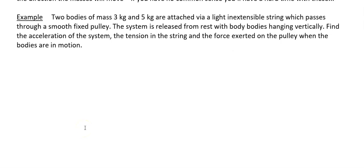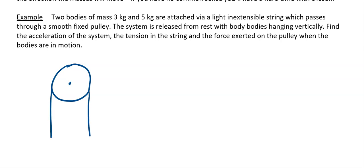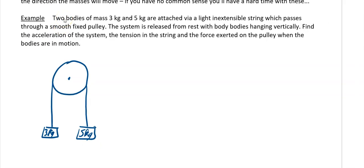Two bodies of mass three kilograms and five kilograms are attached by a light inextensible string which passes through a smooth fixed pulley. The diagram is very easy — just draw a circle representing your pulley, with strings going down on either side. I've got three kilograms on one side and five kilograms on the other. Remember they are masses, so those masses will have weights of 3g newtons and 5g newtons.